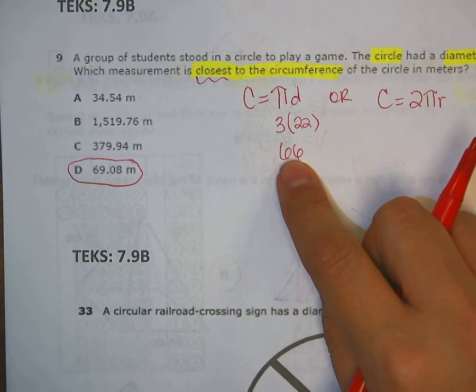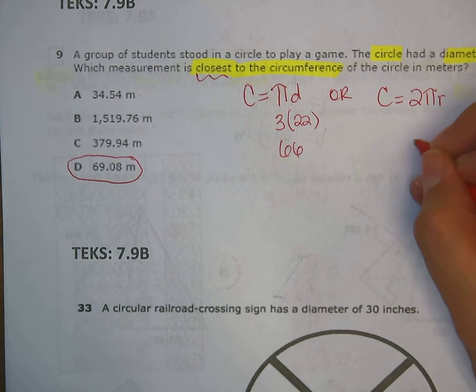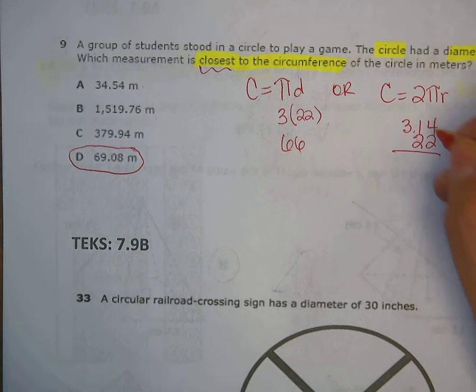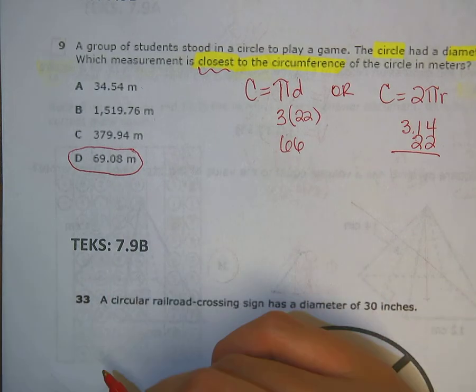Now, if you don't believe me, you could take 22 times 3.14, which honestly I'm not even going to waste my time to do, it probably gives you 69.08 exactly.